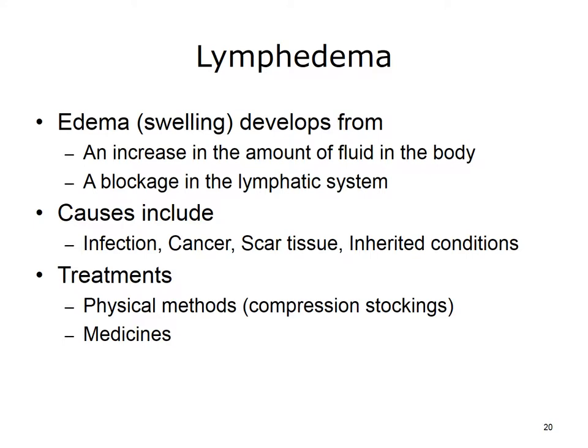There are lots of diseases and disorders that negatively affect the lymphatic system. One common condition is lymphedema. Edema, or swelling, may happen when there is an increase in fluid in the body or because of a blockage in the lymphatic system. The accumulation of lymph is referred to as lymphedema. The causes include various infections, cancer, scar tissue from radiation therapy, surgical removal of lymph nodes, and inherited conditions in which lymph nodes or vessels are absent or abnormal. Treatment of lymphedema includes physical methods such as compression stockings and medicines.